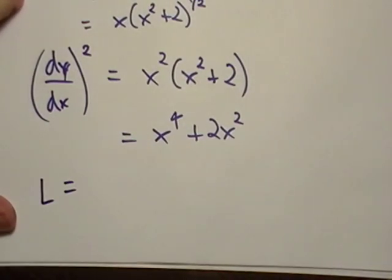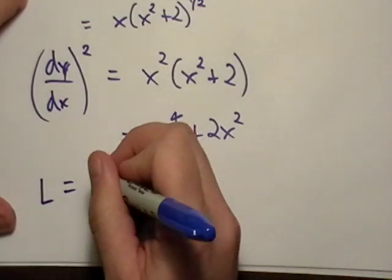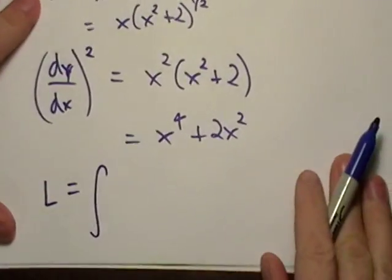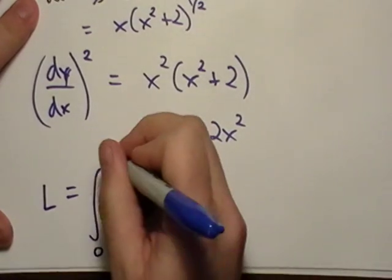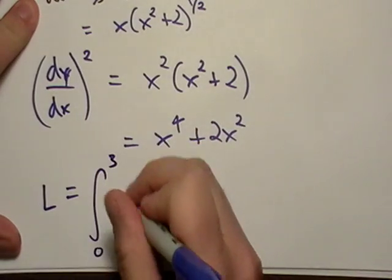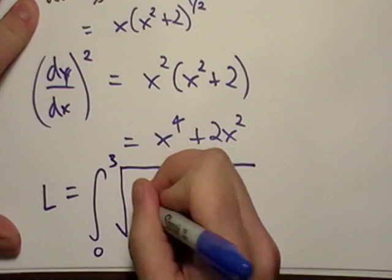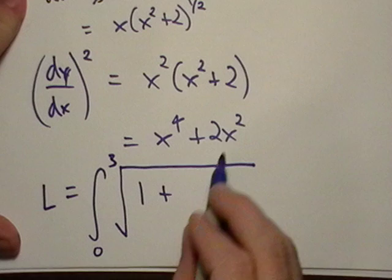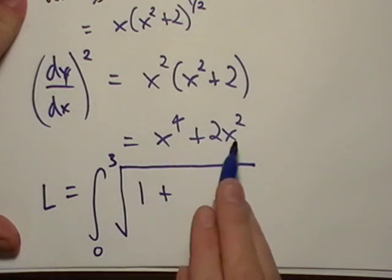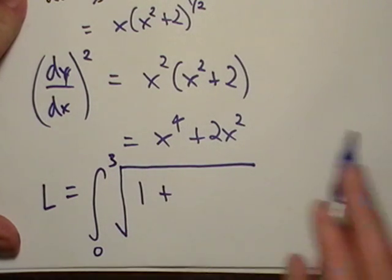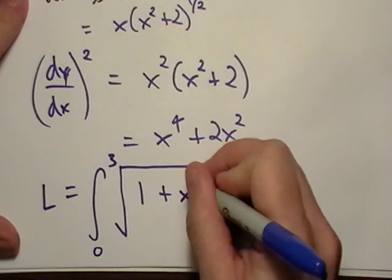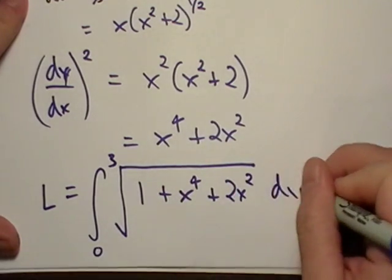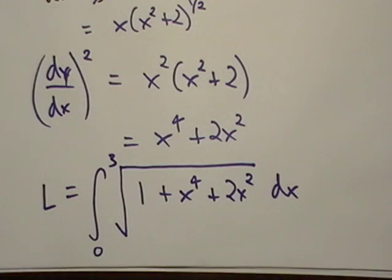And let's see here. So the length, okay, is going to be equal to, let's see here. We're going from zero to three. And we're after the square root of one plus the derivative squared, which we already computed that.